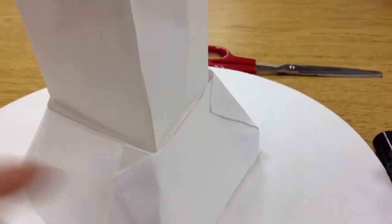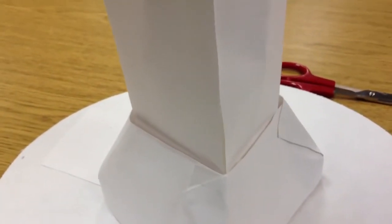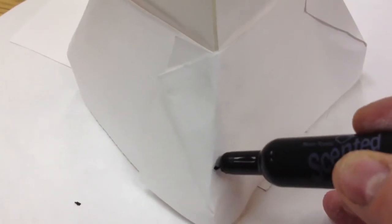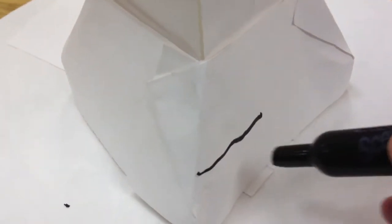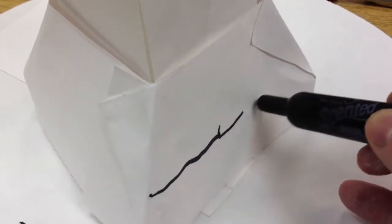We need to draw bricks on here. So I'm going to use a black marker just because it's easier for you to see the black marker, whereas on the video it might be harder for you to see pencil. Draw these lines across first.